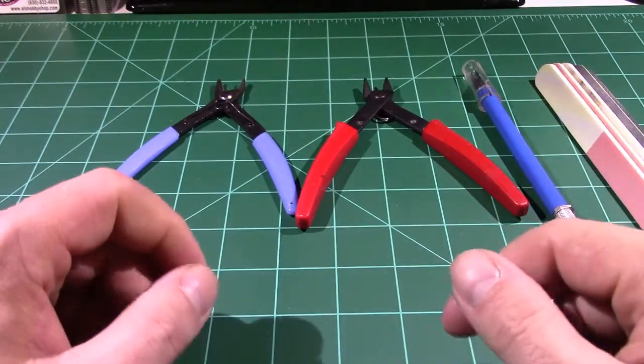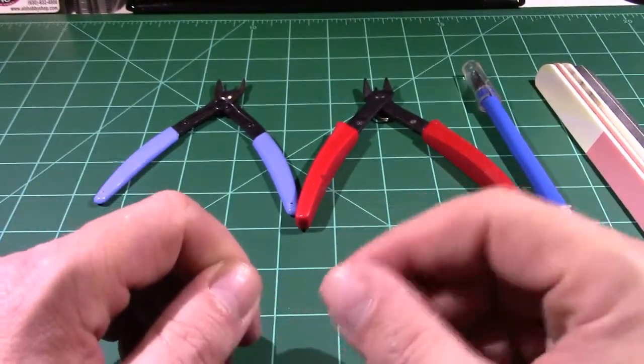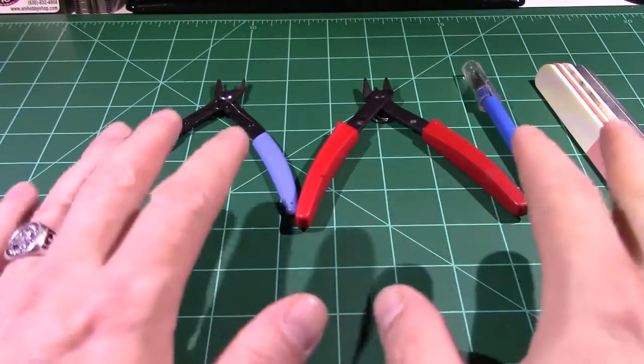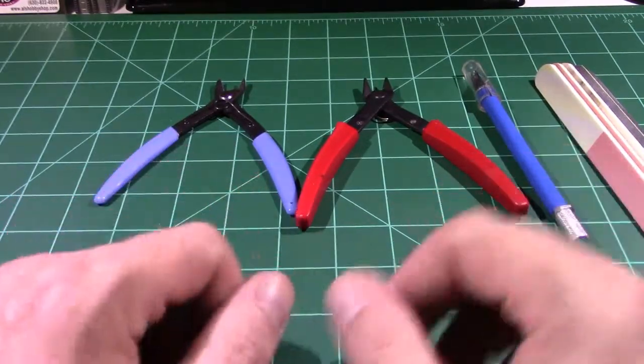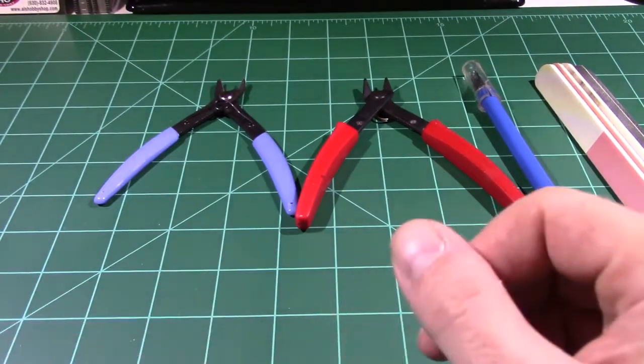Back in the day when my father and I built models, we would just twist the parts off and kind of take a nail clipper and remove the material. And now they have so many good supplies for modeling. It's worth the time to pick up the things that you'll find useful.